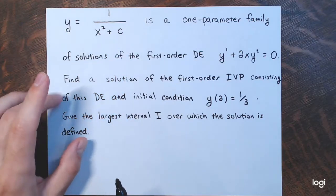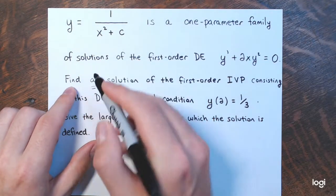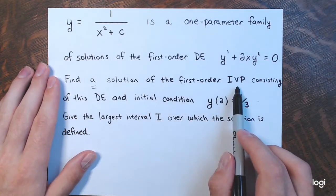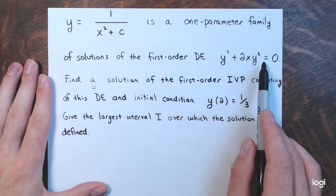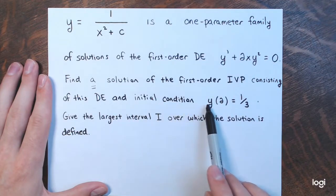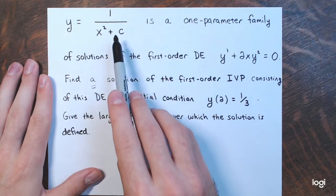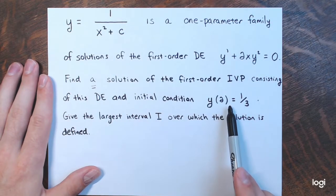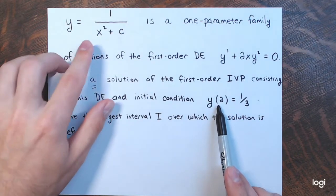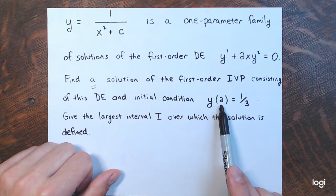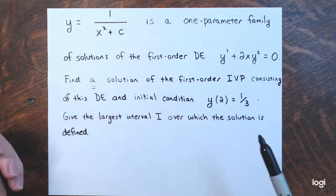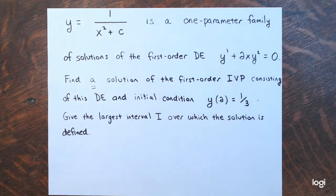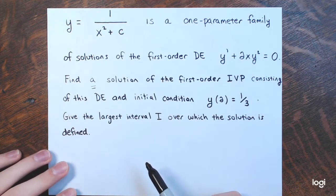We're not looking for the entire family. I want to find a solution — find a particular solution of the first-order initial value problem consisting of the differential equation y prime plus 2xy squared equals 0 and the initial condition. I'm looking for a member of this family that satisfies this condition, where the value of y when x is 2 is 1/3. Then I'll state the largest interval i over which that solution is defined.